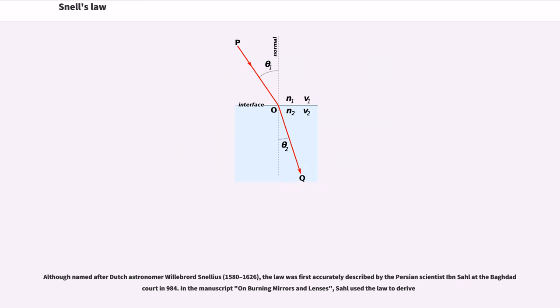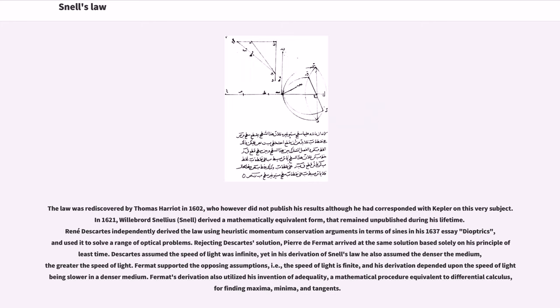Although named after Dutch astronomer Willebrord Snellius, the law was first accurately described by the Persian scientist Ibn Sahl at the Baghdad court in 984. In the manuscript On Burning Mirrors and Lenses, Sahl used the law to derive lens shapes. The law was rediscovered by Thomas Harriot in 1602, who however did not publish his results although he had corresponded with Kepler on this very subject.